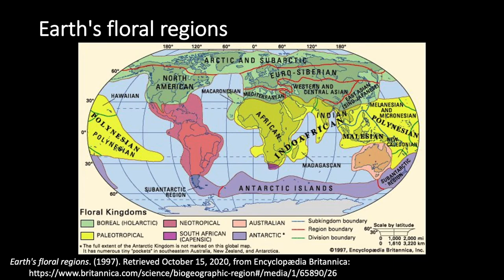The Neotropical kingdom covers all but the extreme southern and southwestern tip of South America. It includes Central America and Mexico, except for the dry northern center of Mexico. The Neotropical region is quite rich — vegetation ranges from tropical rainforest in the Amazon to open savanna in Venezuela and Argentina. Some 47 families and nearly 3,000 genera of flowering plants are endemic to this kingdom, including families like Bromeliaceae (pineapple family) and the cactus family, which are virtually confined to the Neotropical kingdom.